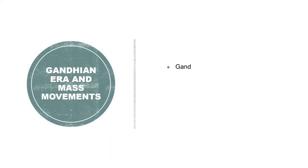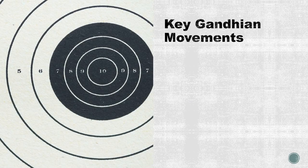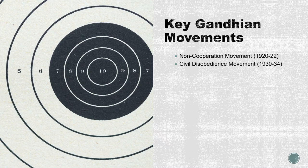The Gandhian era, beginning in the 1920s, introduced a new dimension to the Indian National Movement. Mahatma Gandhi's philosophy of non-violence and civil disobedience galvanized millions across India. The Non-Cooperation Movement between 1920 and 1922, and the Civil Disobedience Movement between 1930 and 1934, were landmark campaigns that mobilized large sections of the Indian populace. Gandhi's leadership during the Quit India Movement of 1942 was crucial in intensifying the struggle for independence.